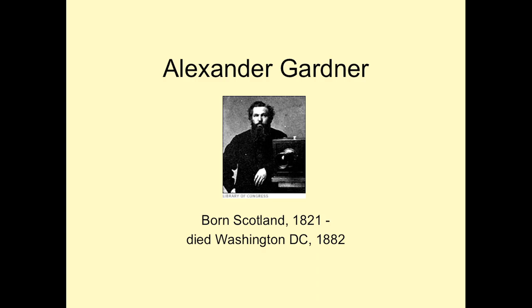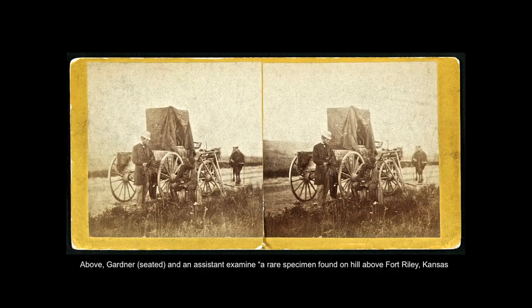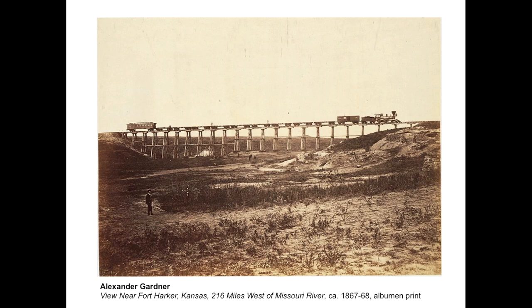Alexander Gardner was a Scotsman who had been a reporter and editor for the Glasgow Sentinel before he immigrated to the United States in 1856, intending to join a socialist society in Iowa. His fare had been paid by Matthew Brady, as Gardner was a known early wet plate expert. In 1858 he became manager of Brady's Washington, D.C. studio. Here you can see Alexander Gardner seated in a stereograph in front of his darkroom wagon. He accompanied Brady's Civil War effort, making as many as three-quarters of Matthew Brady's images, again with the stamp of Brady's studio.